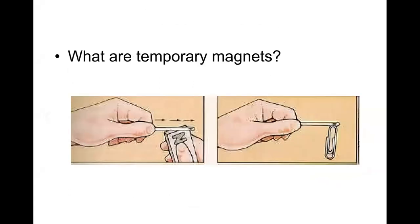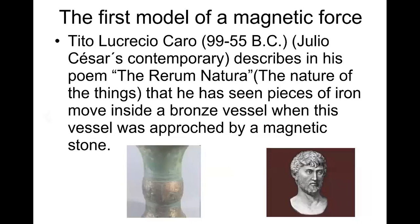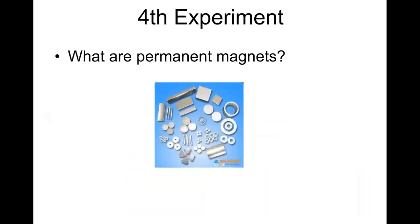What are temporary magnets? Temporary magnets are those which act like a permanent magnet when they are within a strong magnetic field, but lose their magnetism when magnetic fields disappear. And we'll talk about the first model.